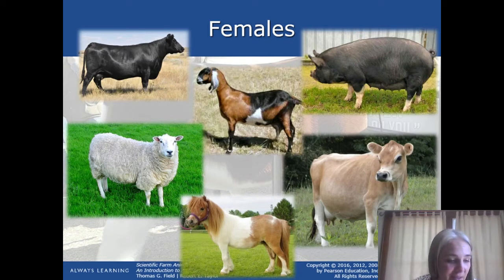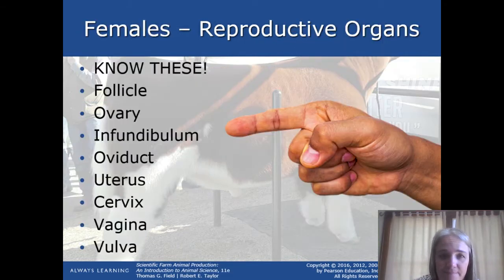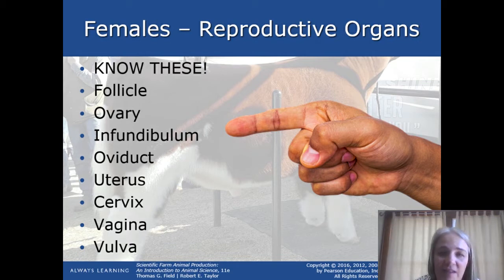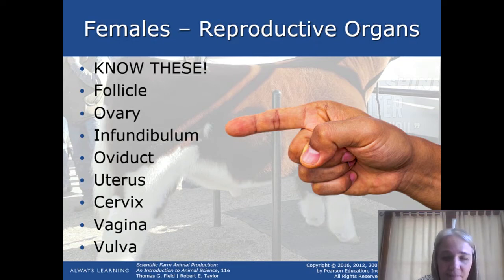We're going to start with the females. The things we talk about are pretty common between all of the farm animal mammals. I'd recommend pausing this video and making space in your notes for each of the female reproductive organs. It's important for you to know about the follicle, the ovary, the infundibulum, the oviduct, the uterus, cervix, vagina, and vulva.